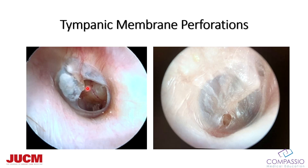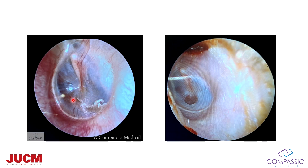Tympanic membrane perforations — here's a left ear with almost a 40% TM perforation in that posterior inferior quadrant. Pretty obvious. This was a little more subtle — a traumatic TM perforation. I would refer these patients to the ENT provider just to get their hearing checked. Here's another traumatic TM perforation that's going to heal no problem. And this one duped me — I thought it was a hole, but it's actually a really thin layer of tympanic membrane.